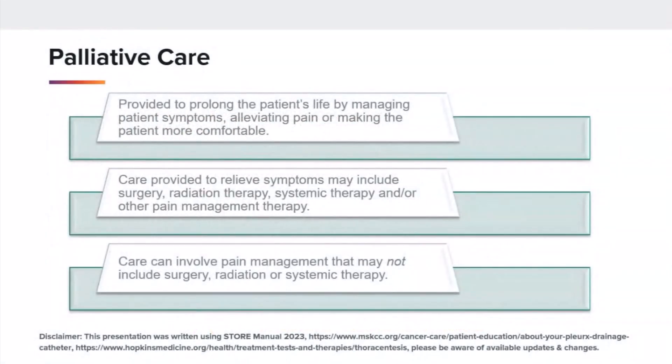First, I'd like to discuss palliative care definitions as described in our Standard Setter manuals. The World Health Organization describes palliative care as treatment that improves the quality of life by preventing or relieving suffering. The STOR manual also gives the description that palliative care is provided to prolong the patient's life by managing patient symptoms, alleviating pain, or making the patient more comfortable.